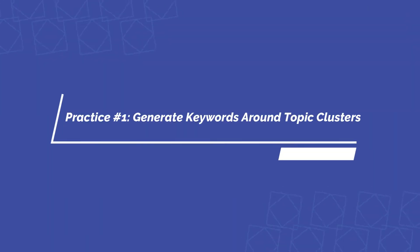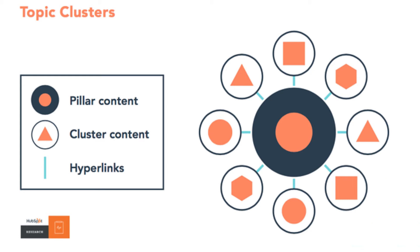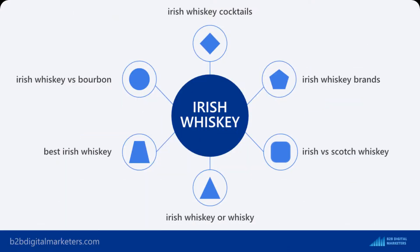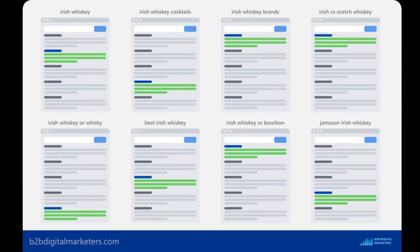The first practice is to generate keywords around your targeted topic clusters. For example, if you are in the whisky niche, then one topic cluster you would want to target is Irish Whisky. You simply want to target all the keywords related to the topic Irish Whisky to create topical relevancy on your website and therefore own the topic in search.